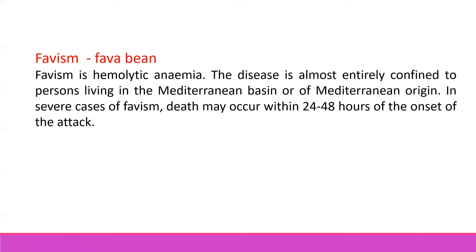Next is favism, which is due to the consumption of fava beans. Favism is hemolytic anemia — that is, the destruction of red blood cells by the toxin present in fava beans. This disease is almost entirely confined to persons living in the Mediterranean basin. In severe cases of favism, death may occur between 24 to 48 hours of the onset of the attack. The side effect of favism is very fast — within one or two days the effect is known. Whereas in lathyrism, the side effect occurs only when the bean is eaten for a very long time in excess.